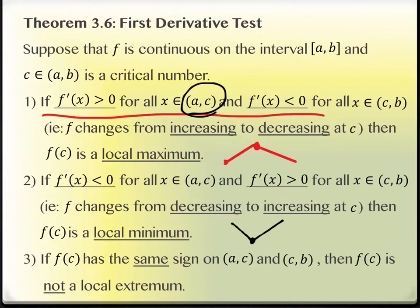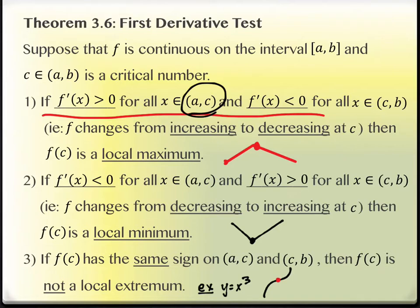If f(c) has the same sign on both sides — increasing from a to c and increasing from c to b, or decreasing on both sides — then there are actually no local extrema. A great example is y = x³. There is a point in the middle where the derivative is zero, but you can see the graph is increasing before and after that point. The derivative sign didn't change, so it's not a maximum or minimum — no extrema.